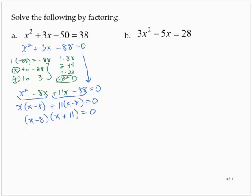Now, the 0 factor property says if we have a product of numbers equal to 0, one or both of those factors is 0. So then x minus 8 is 0, or x plus 11 is 0. So x is equal to 8, or x is equal to negative 11.